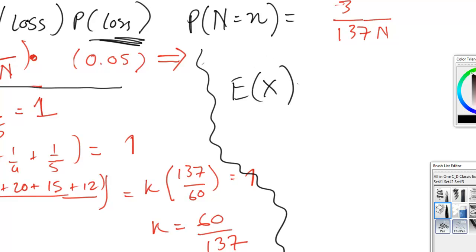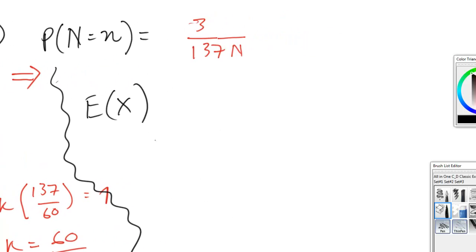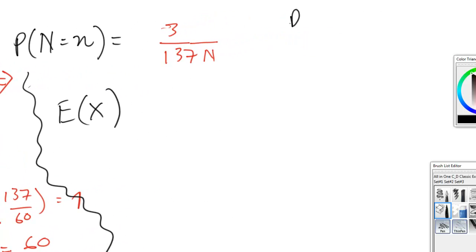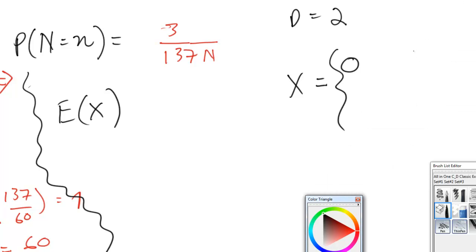So now we can actually get to start working on what we actually need. So we're looking for the expected value of x. Well, it turns out that because there's a deductible of 2, we know that x is going to be 0 if the amount of loss is less than or equal to 2, or it's going to be n minus 2 if the amount of loss is greater than 2. In this case, the insurance company is not going to pay out. So then that means that the amount of losses that we are interested in is 3, 4, and 5.